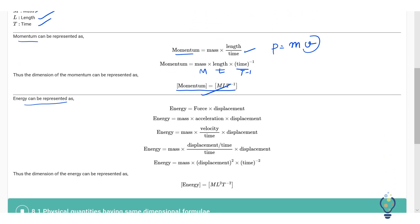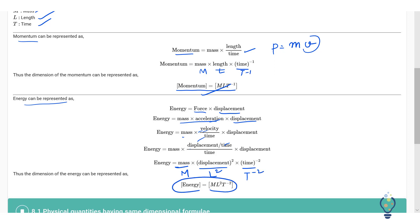Similarly, energy can be written as force into displacement, which is mass into acceleration into displacement. Acceleration is velocity by time, and velocity is displacement by time. So energy becomes mass into displacement squared into time minus 2. All these are fundamental quantities — mass, displacement means length, time means T. So the dimensional formula for energy is ML²T⁻².